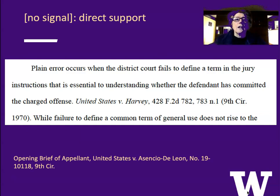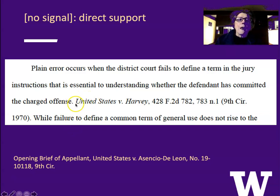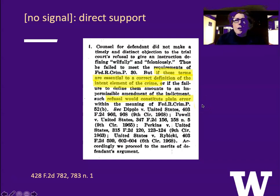The first signal is no signal at all — it's direct support. That means you don't need any special flag or trumpet fanfare before you cite your source. Here we have: 'Plain error occurs when the district court fails to define a term in the jury instructions that is essential to understanding whether the defendant has committed the charged offense.' This is from a Ninth Circuit brief from last year. The author cites United States v. Harvey, a Ninth Circuit case, and in particular a footnote there. This is direct support because if we go look up that footnote, we find that the footnote says basically what the brief author said it said: 'If these terms are essential to a correct definition of the intent element of the crime, refusal to include them in the jury instruction would constitute plain error.' So there's no need to say 'see' or 'see generally' because this footnote supports what the brief author said.